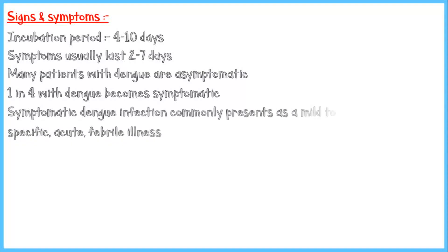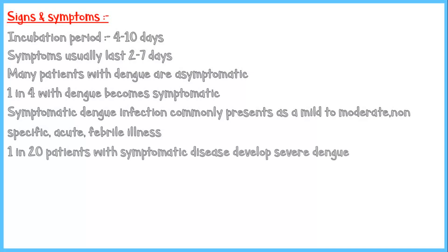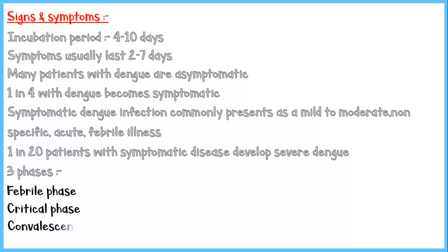Symptomatic infection commonly presents as a mild to moderate, non-specific acute febrile illness. About 1 in 20 patients with symptomatic disease develop severe dengue, and most of these patients have a history of a prior dengue infection. There are three phases of the clinical course of a dengue viral infection: the febrile phase, the critical phase, and the convalescent or recovery phase.